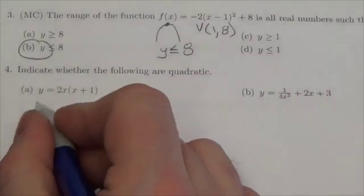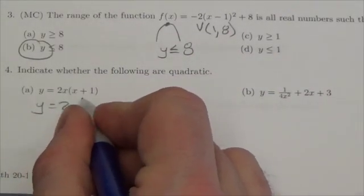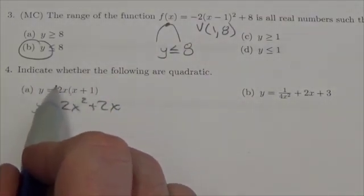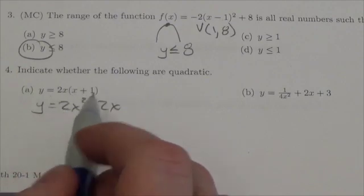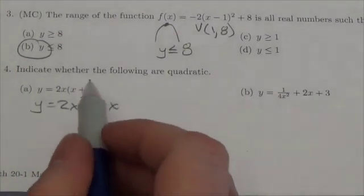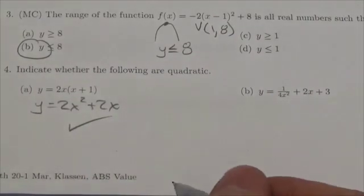For this one right here, you just want to expand that out here and make this 2x squared plus 2x. When you look at it the way it's sitting right now, I've got 2x that's kind of linear, x plus 1 is linear, but when you multiply two linear functions together the result is quadratic. So yep, that one is quadratic.